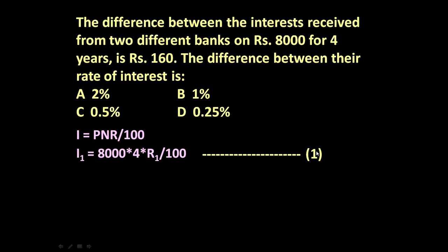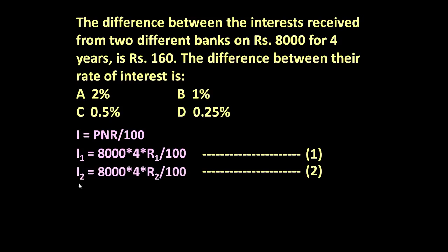For the second bank, when he invests his amount, the interest received is I2 = 8000 × 4 × R2 / 100. Now let us find out the difference between these two.